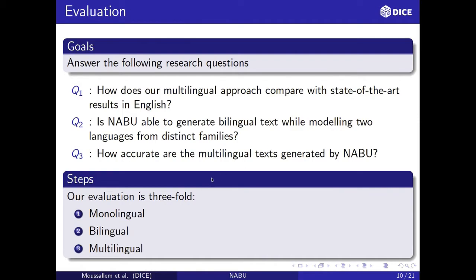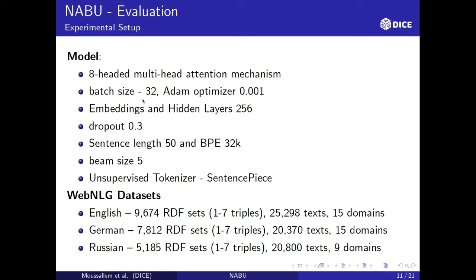The third research question: how accurate are the multilingual texts generated by NABU? Our evaluation follows a three-fold manner: monolingual, bilingual, and multilingual. The experimental setup used an eight-headed attention mechanism, batch size of 32, Adam optimizer with learning rate 0.001, embedding and hidden layer of 256, dropout of 0.3, sentence length 50, and BPE 32,000. We used beam size 5 and a supervised tokenizer named SentencePiece to tokenize English, German, and Russian with the same tokenizer.